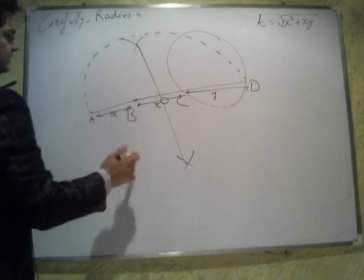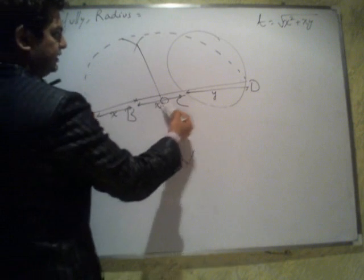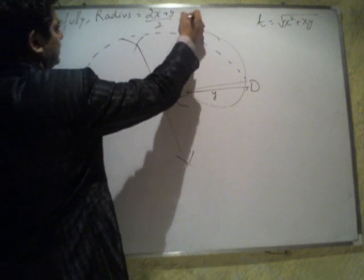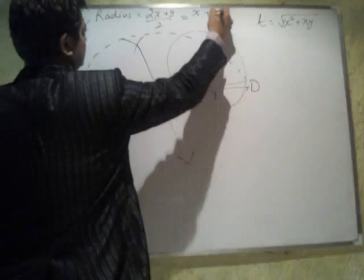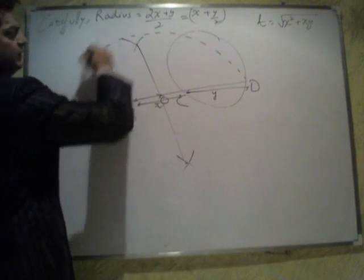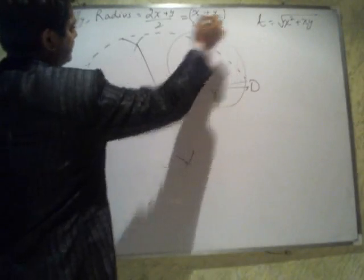Sense that radius is equal to X plus X, 2X plus Y upon 2, that is X plus Y upon 2. From this point to any of this point, the distance is this.